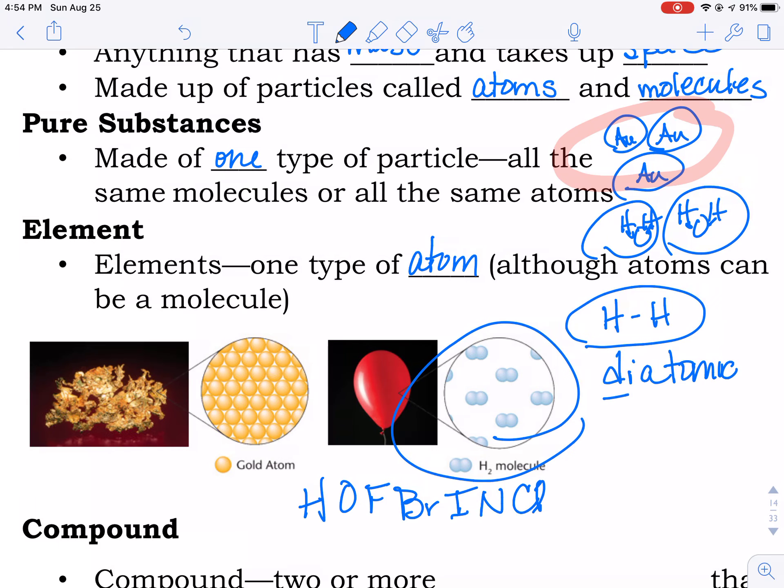That would be hydrogen, oxygen, fluorine, bromine, iodine, nitrogen, and chlorine. They always have two when they are in their elemental state.